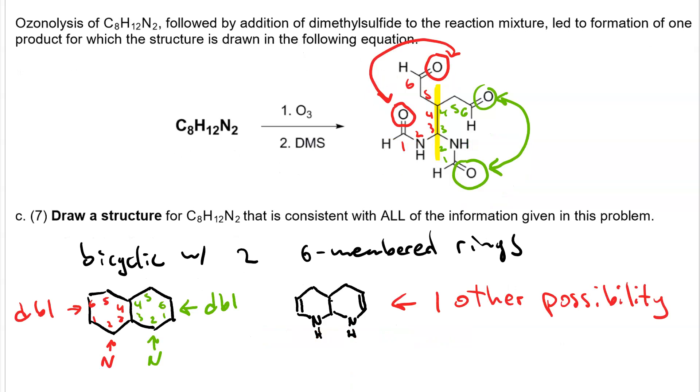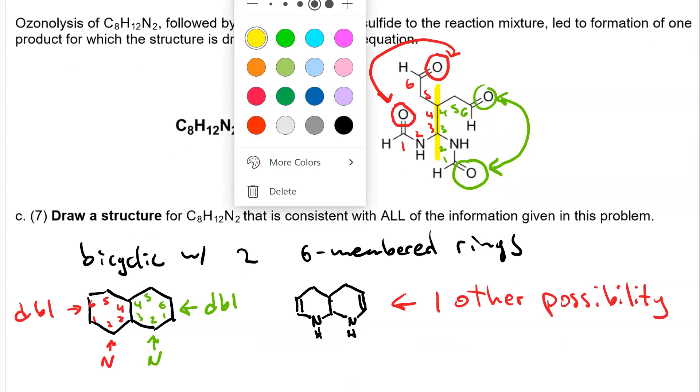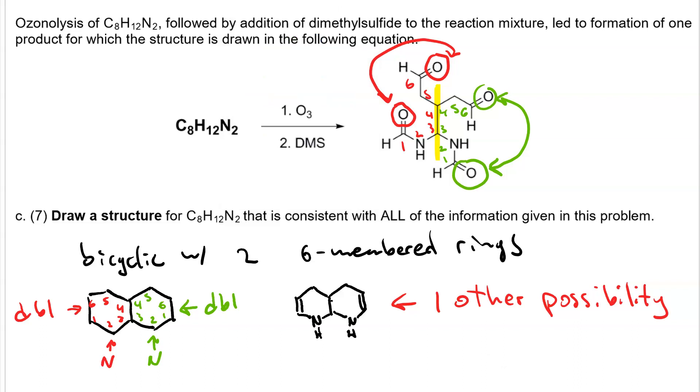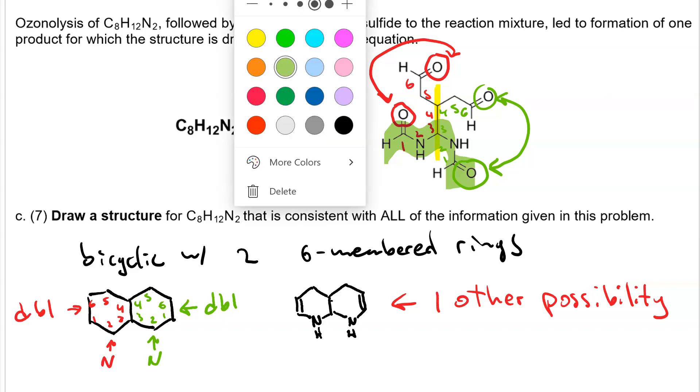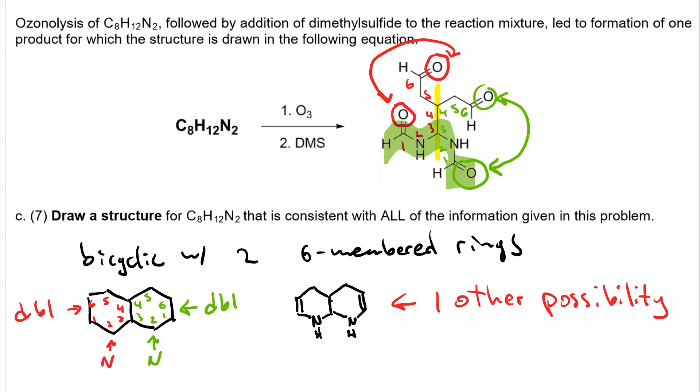Bear in mind, this would also produce one other possibility. What if we connected up that as its own ring and this as its own ring? Then you'd get two 5-membered rings, one of which had two nitrogens. And it would look like this.